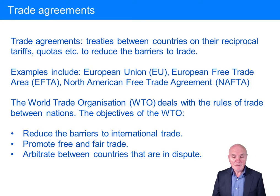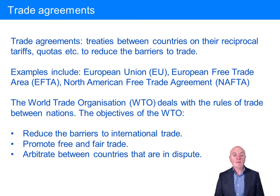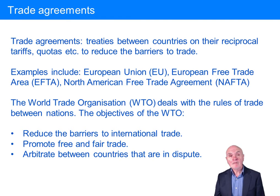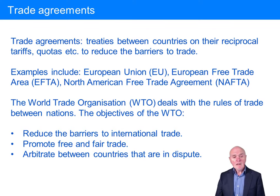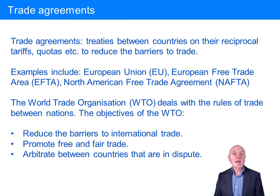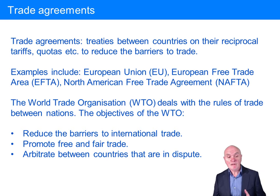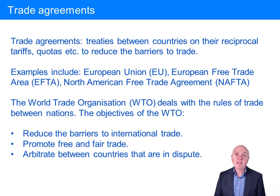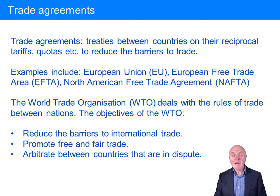Examples of trade agreements include the European Union, the European Free Trade Area — which is slightly bigger than the EU — and the North American Free Trade Agreement, which involves Mexico, the United States and Canada. Sometimes politicians want to pull the rug from under these, particularly those who favour protectionism. There is also an organisation called the World Trade Organisation, which has default rules and regulations about fair trade, tariffs and quotas. These can be overridden by specific trade agreements, but the WTO also aims to arbitrate between countries in dispute and overall to encourage the free movement of goods throughout the world.